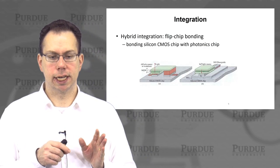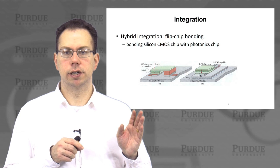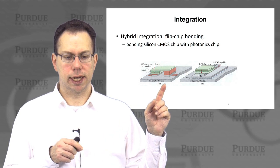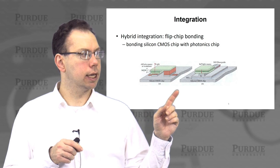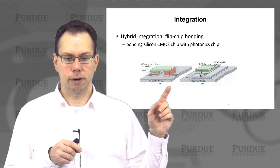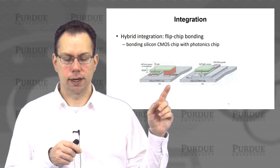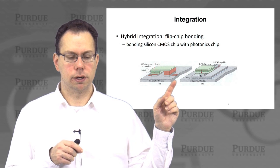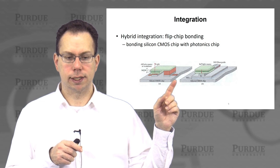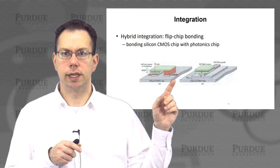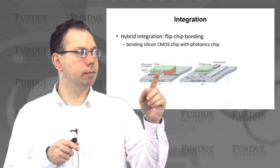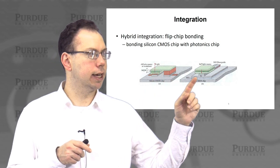So this flip-chip bonding that I mentioned earlier — let me show you in a little more detail how this works. Basically what's happening is you're making a silicon CMOS chip, shown on the bottom, and this silicon CMOS chip is actually being connected to a multiple quantum well structure, which might be made out of AlGaAs at around 1.3 to 1.5 microns, or at shorter wavelengths might be connected to something like indium phosphide.